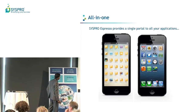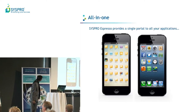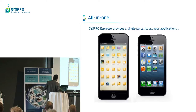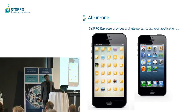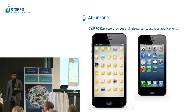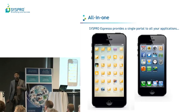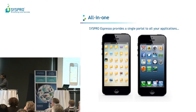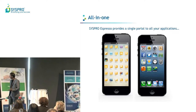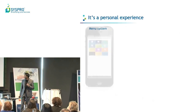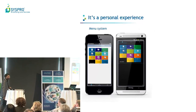We looked at our competitors and saw what they did. Some companies have multiple applications to do various different things — a sales order application has a sales order button, a CRM app has another button, and so forth. If you had ten different tasks, you had ten different icons on your main screen. What we've done is have one icon — it's called SysPro Espresso. When you log in for the first time, you'll be presented with a menu, and this menu is completely customizable.